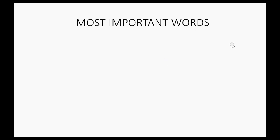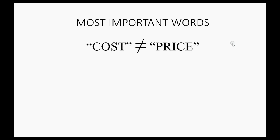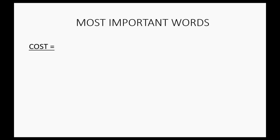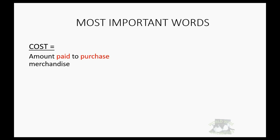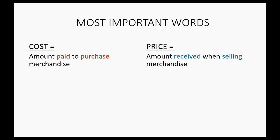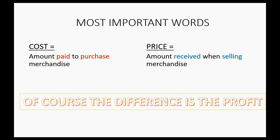Now, the most important words in this video are the words cost and price. You have to make sure you know the difference between the word cost and the word price. Cost means the amount that we paid to purchase the merchandise from the vendor. But for that very same merchandise, the word price means the amount we received from the customer when selling the merchandise. And of course, the difference is your profit.